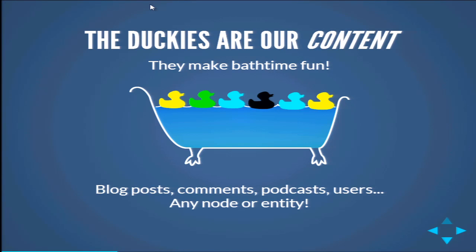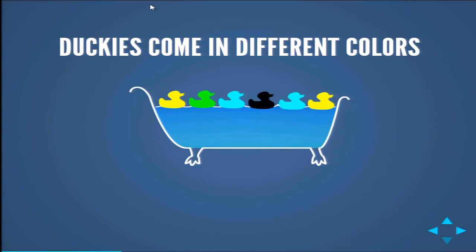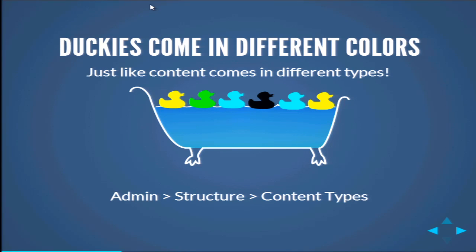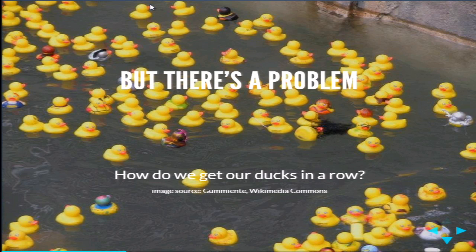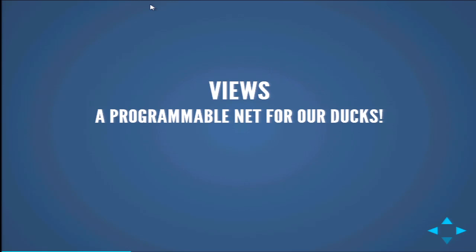And also, that's any node or entity. In Drupal 7, an entity is bigger than a content type — it's a lot of other stuff. Ducks come in different colors, just like our content comes in different types. Every time you want to build a new content type, you go to your Drupal page, log in as an administrator, go to Admin > Structure > Content Types, and make your content type. But there's a problem: how do we get our ducks in a row? We need a programmable net for our ducks, and that's what Views does.